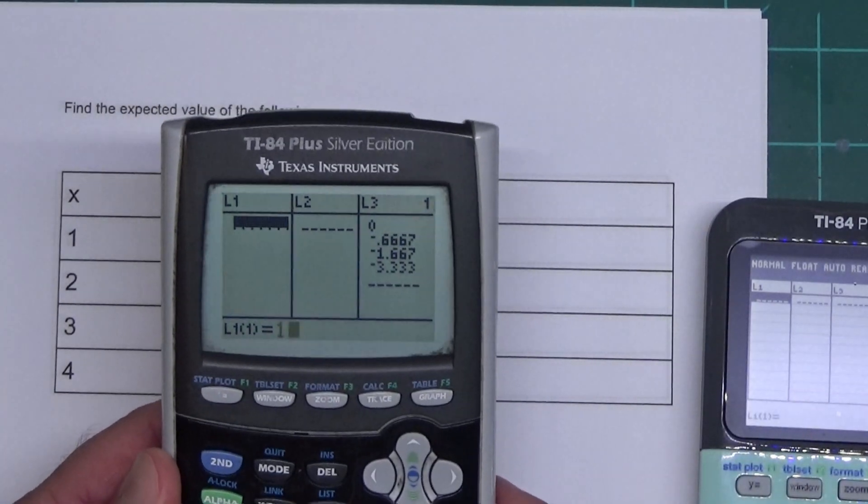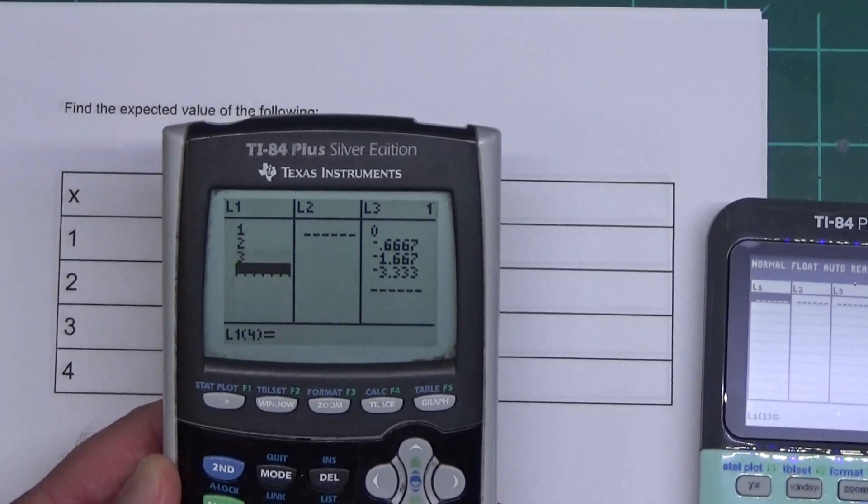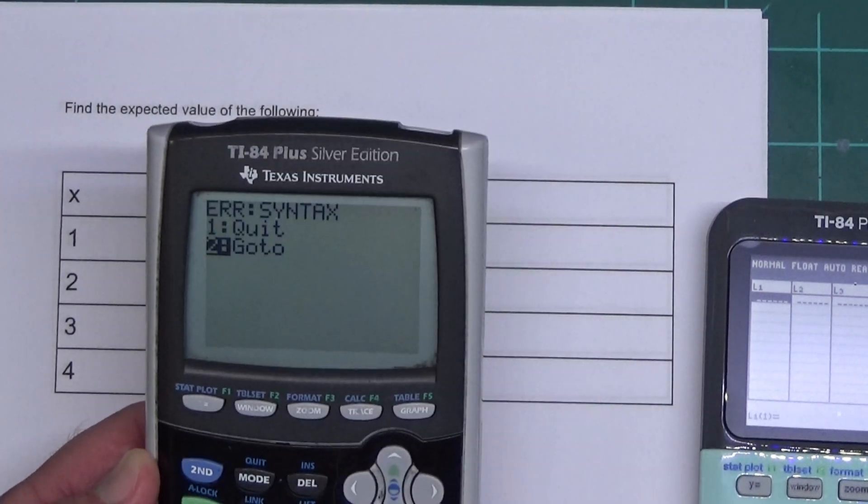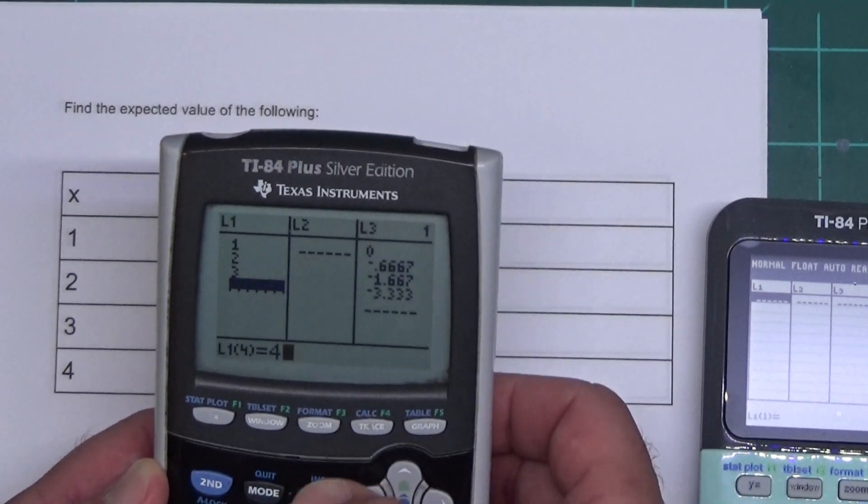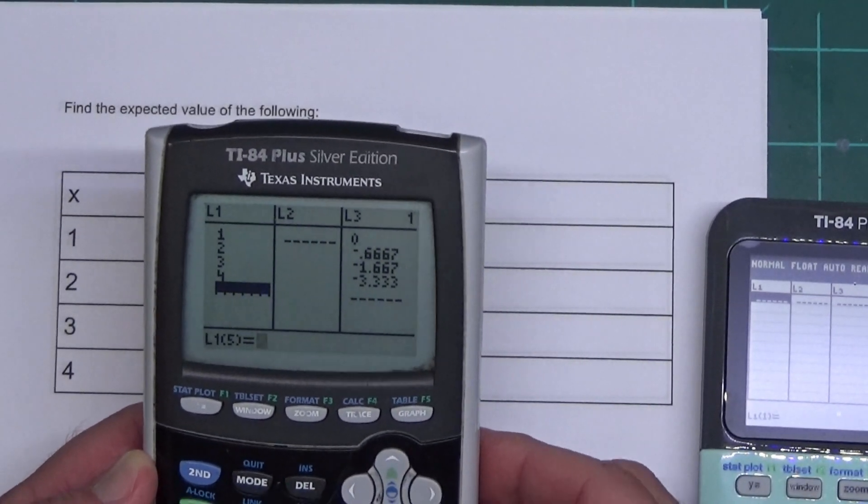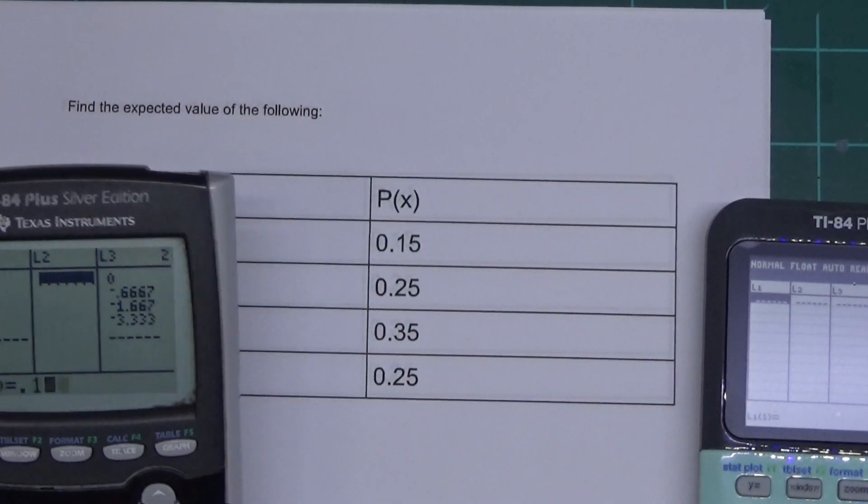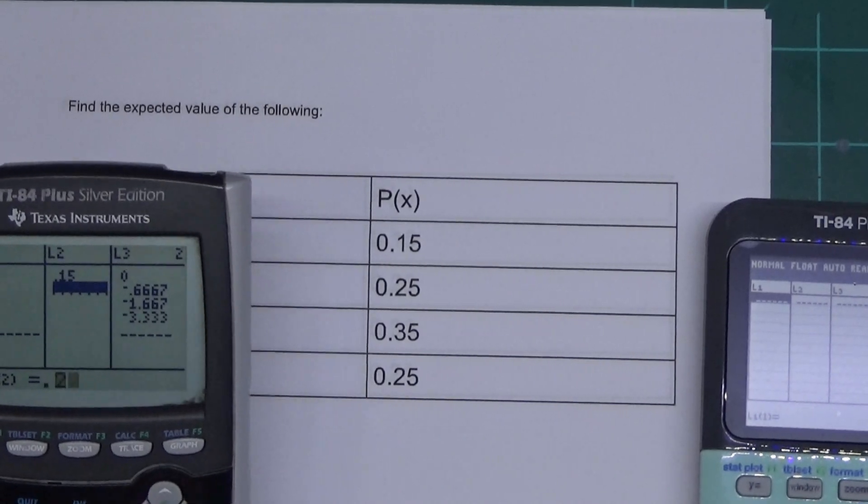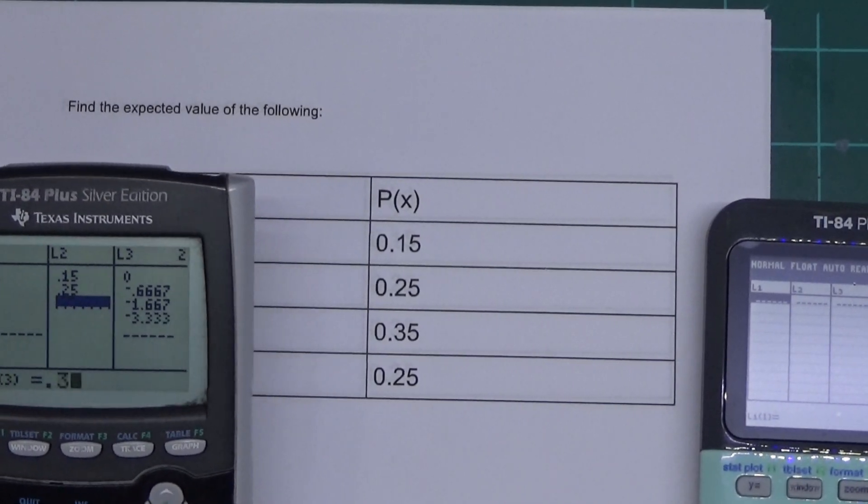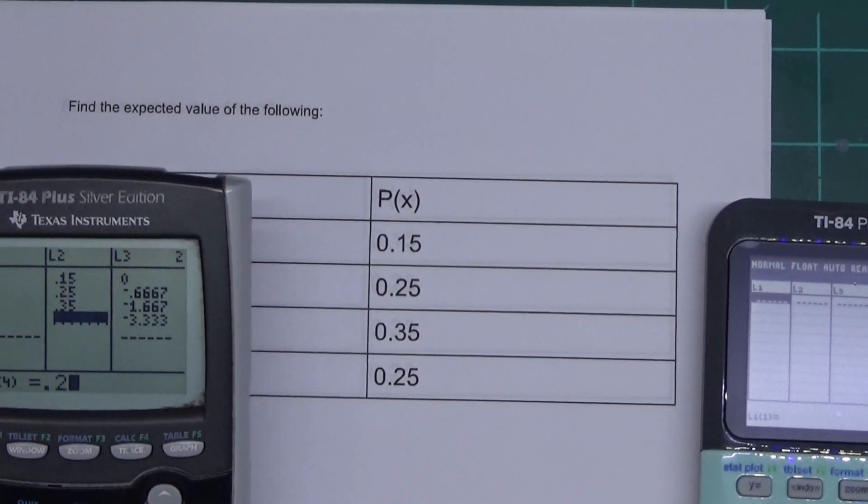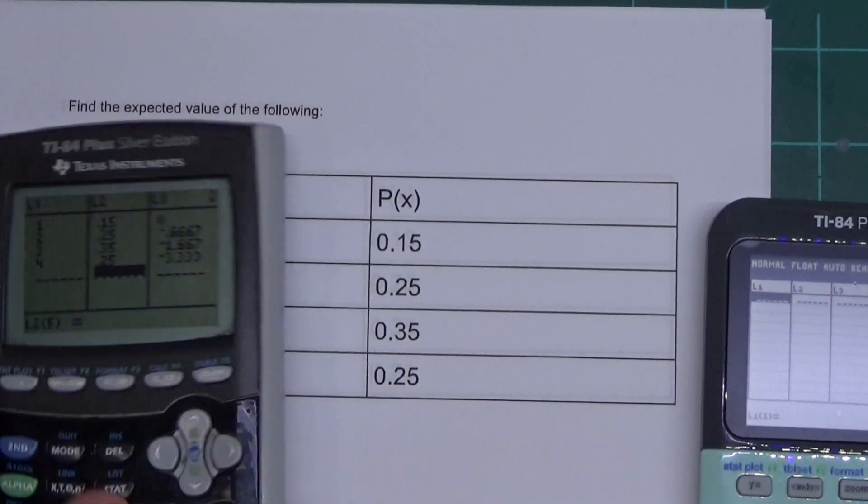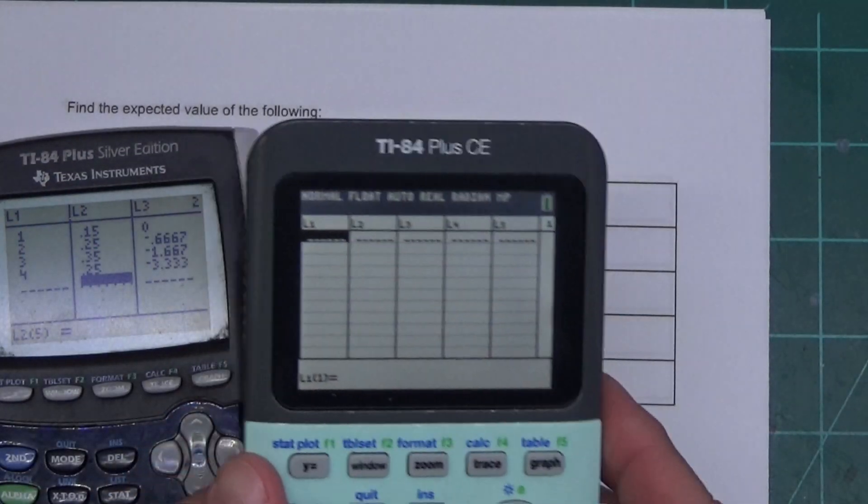Now, let's type it in: one, two, three, four. One, Enter, two, three, four, and it helps if you actually type what you're saying instead of four plus. Over here, in L2, we're going to type in the 0.15, the 0.25, the 0.35, the 0.25. So, I have those numbers in there. I'm going to go ahead and work with this one.